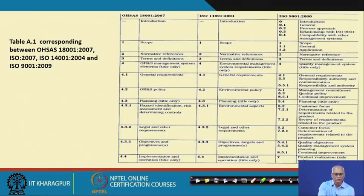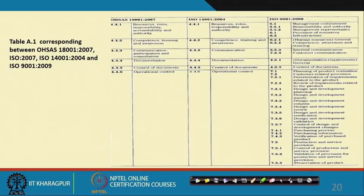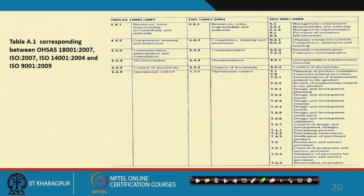The clauses of OHSAS 18001 include: scope, references, OHS policy, planning — hazard identification, legal and other requirements, objectives — resources, competence and training, communication, documentation, control of documents, and operational controls. All of these are based on PDCA.